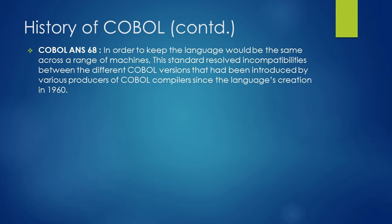The first two letters of COBOL — C and O — stand for 'common,' which means the language would be the same across a range of machines. Since the creation of COBOL in 1960, various producers of COBOL compilers had introduced different COBOL versions that were incompatible and away from the idea of 'common.' COBOL ANS-68 resolved incompatibilities between different COBOL versions and made COBOL a standard language that would run across different computers.